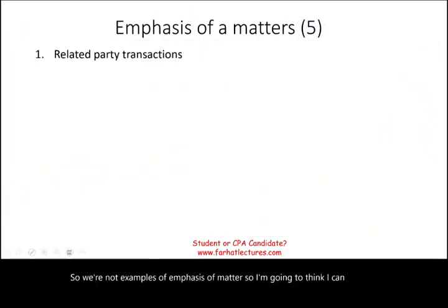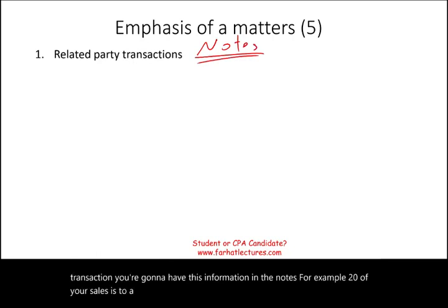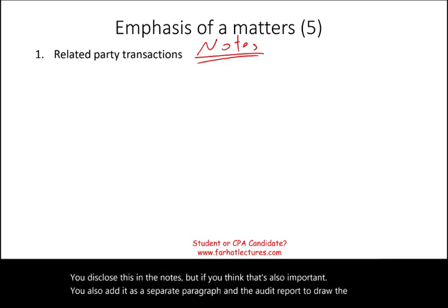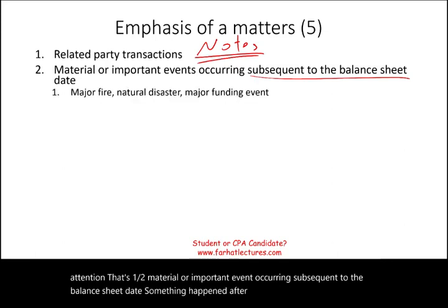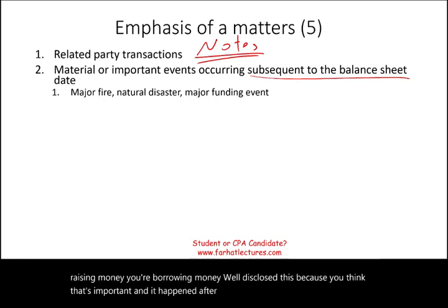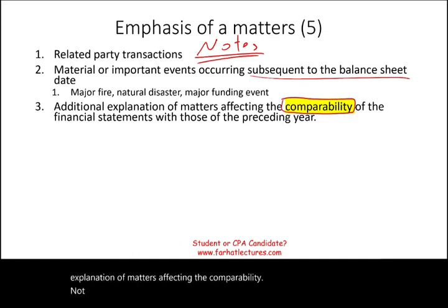So what are examples of emphasis of other matters? I can think of five. First, related party transactions — if you have a related party transaction, this information will be in the notes. For example, 20% of your sales are to a related party. You disclose this in the notes, but if you think it's also important, you add it as a separate paragraph in the audit report to draw the user's attention. Second, a material or important event occurring subsequent to the balance sheet date — a major fire, natural disaster, major funding event, borrowing money — disclose this because it happened after the balance sheet date.